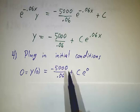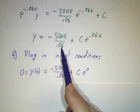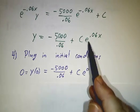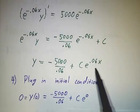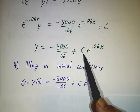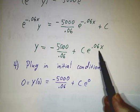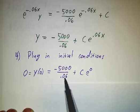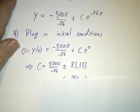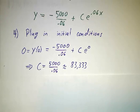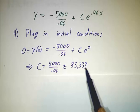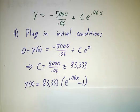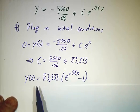So you plug in x equals 0 and you get 0 equals minus 5000/0.06 plus c times e to the 0, and that tells us that c has to be 5000/0.06, which is 83,333. We'll ignore the 33.333 cents.